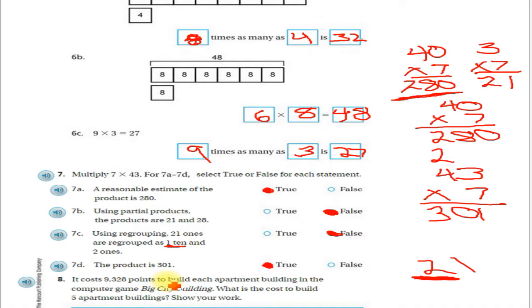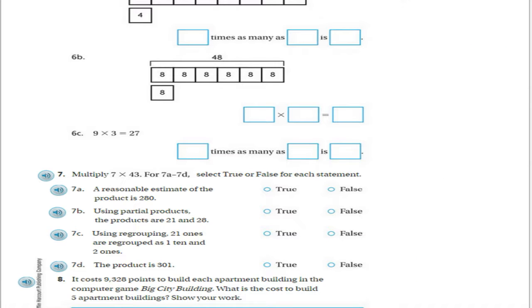Okay, now for this last one. Again, I'm going to erase all my work. I don't want you guys to erase your work - you have scratch paper, I don't. You guys are lucky, so I'm going to erase all this and bring my pen back and I'm going to start working on this one. Number 8: It costs 9,328 points to build each apartment building in the computer game Big City Building.